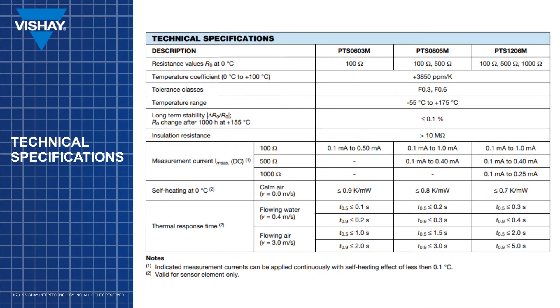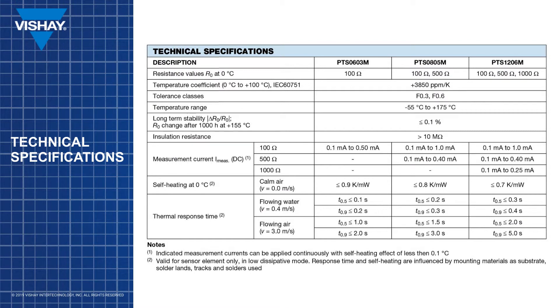500 ohms is available in 0805 and 1206 case sizes and 1K is available in 1206 case size only. The near linear temperature characteristic between 0 degrees C and 100 degrees C is plus 3850 ppm per K according to the IEC standard 60751. The PTS-AT offers best-in-class long-term stability specified at less than or equal to 0.1% after 1000 hours operation at 155 degrees C.